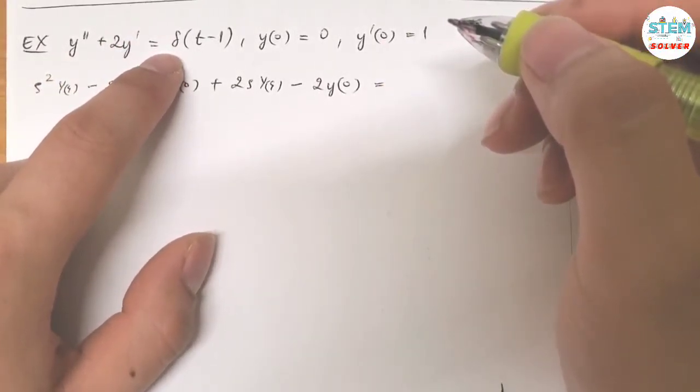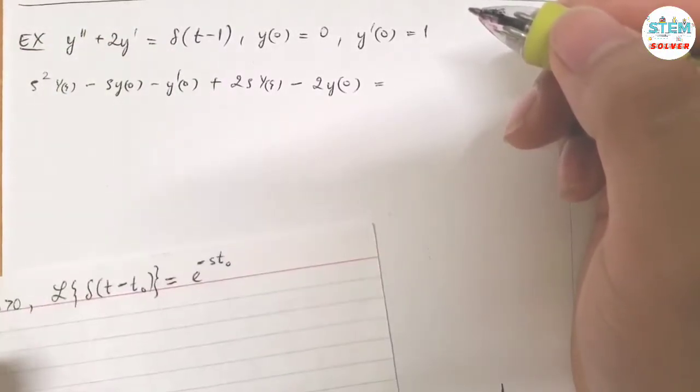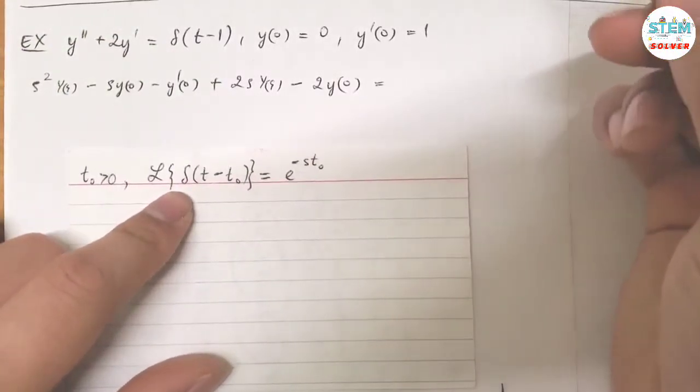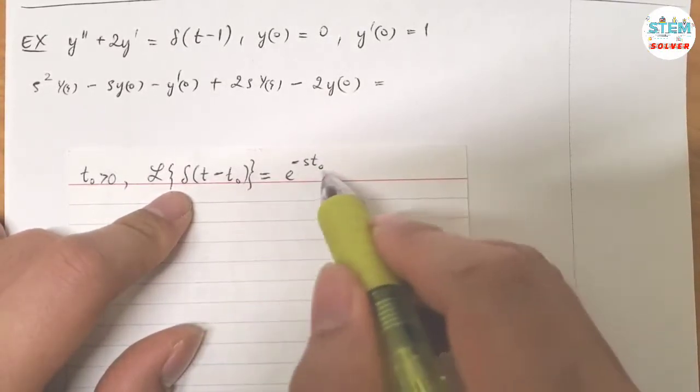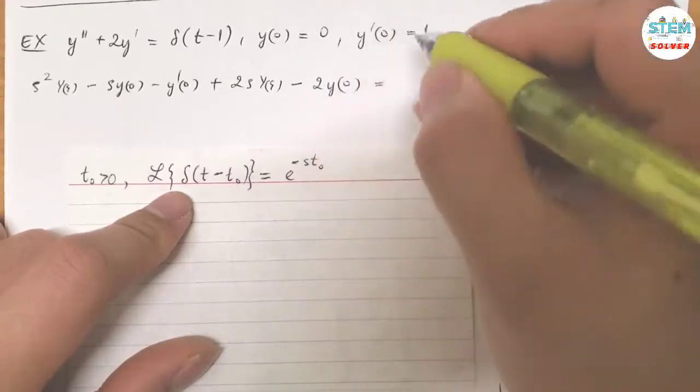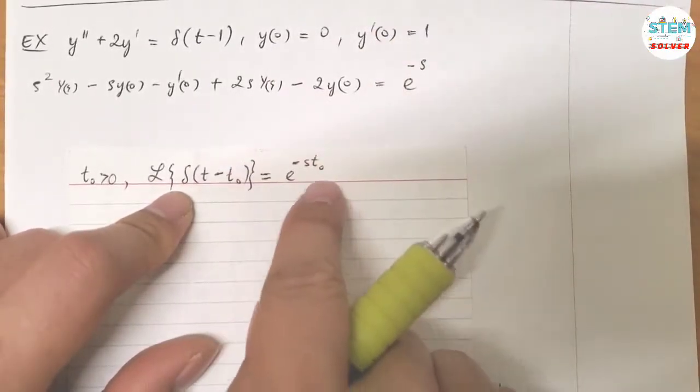This is called the direct delta function. And if you don't remember, the Laplace transform of the direct delta function is equal to E to the negative S T0, so whatever T0 here is, you just plug it into here. So in this case, I have E to the negative S, right, because the T0 is just 1.